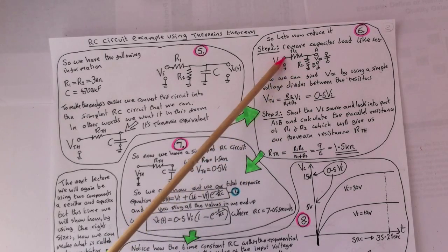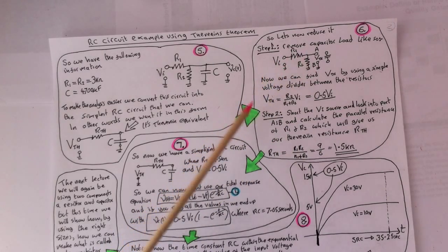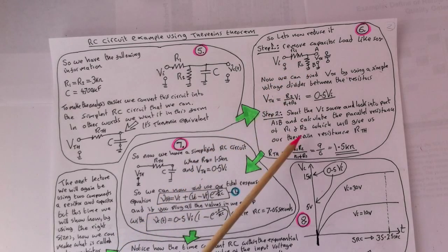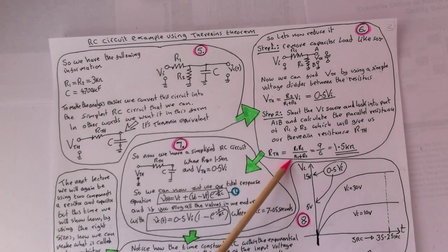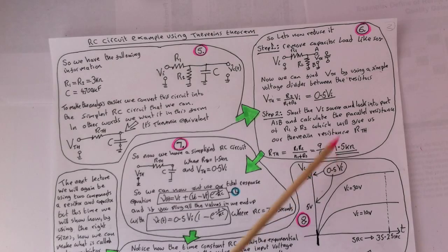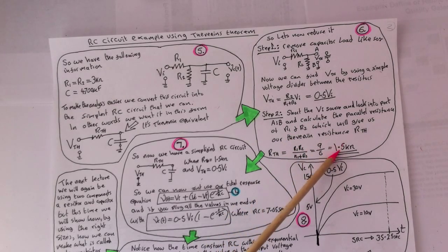So we look into this port and that's, you can imagine that's down to earth now. You're looking into a parallel circuit here. So we can just calculate the Thevenin resistance by treating that as a parallel circuit. So R1 times R2 over R1 plus R2. And that becomes 9 over 6, which is 1.5 kilo ohms.